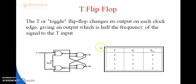Next we come to T flip-flop. T stands for toggle. The T or toggle flip-flop changes its output on each clock edge, giving an output which is half the frequency of the signal to the T input. In JK flip-flop, if J equals K, then the resulting flip-flop is referred to as T flip-flop. It has only one input, that is T.